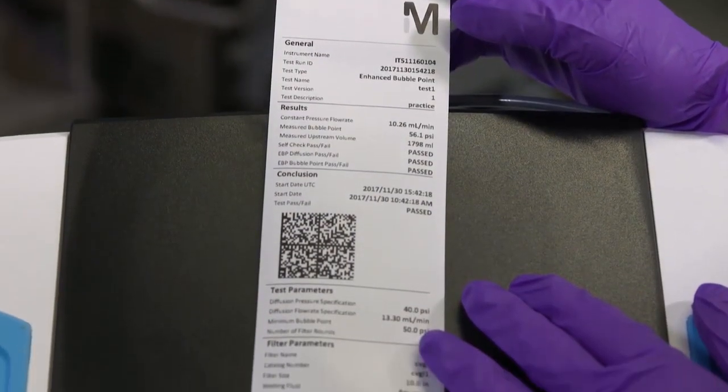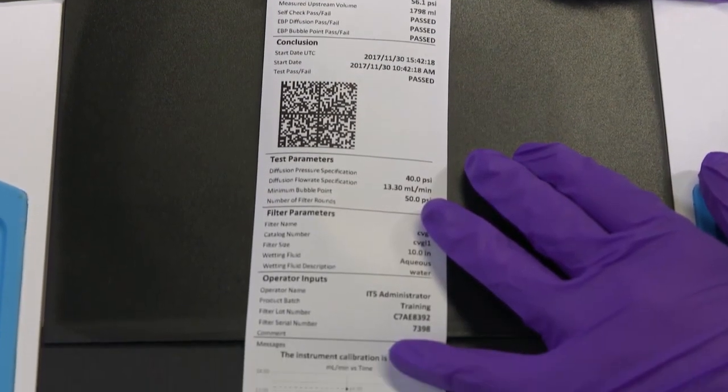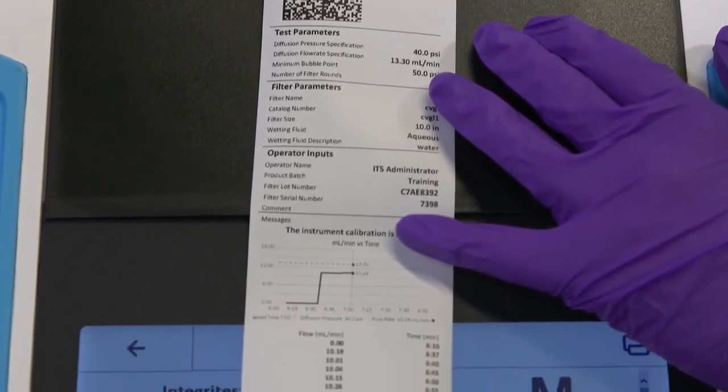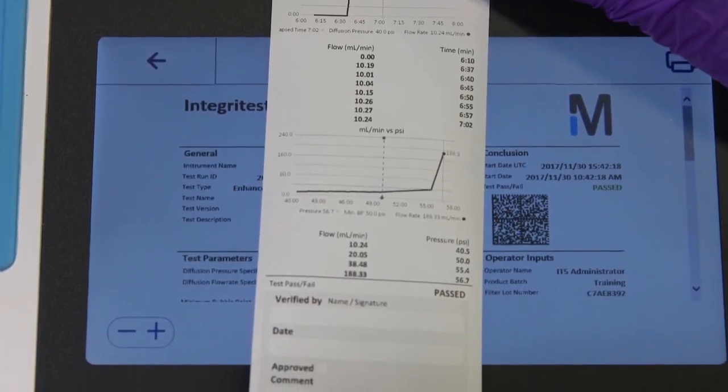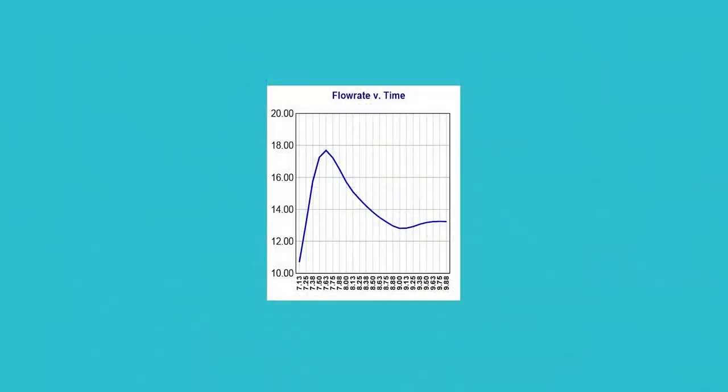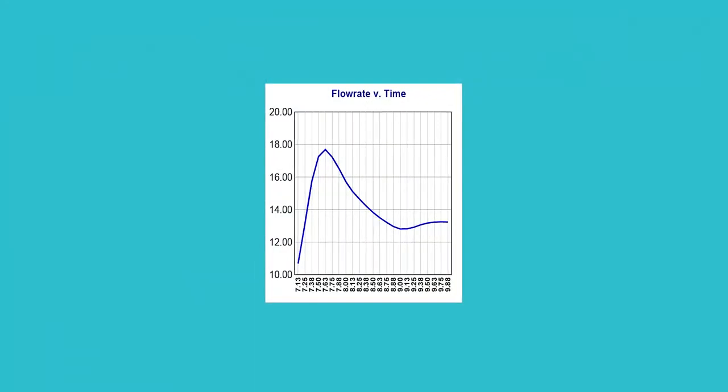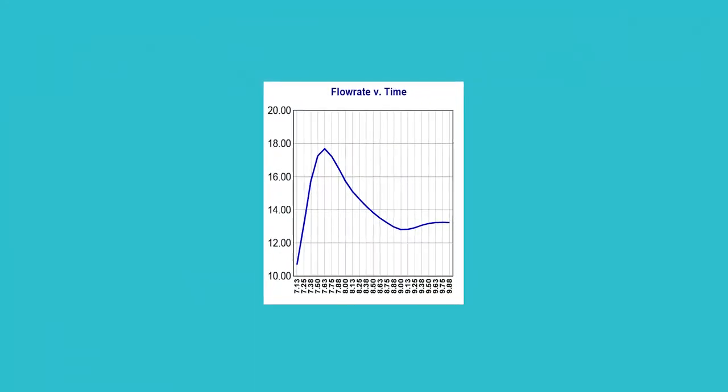When the test is complete, you will want to evaluate the results to ensure the test was performed correctly. If the test failed, reviewing the printout can also provide important clues as to the possible root causes. Here is an example of a printout where there was a false failure due to temperature decrease.